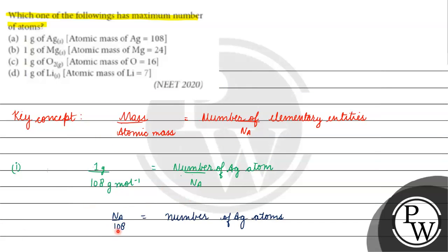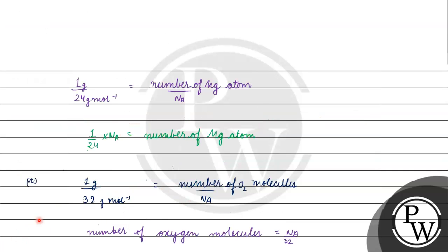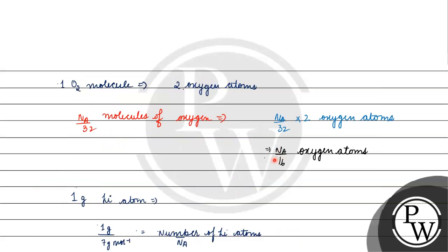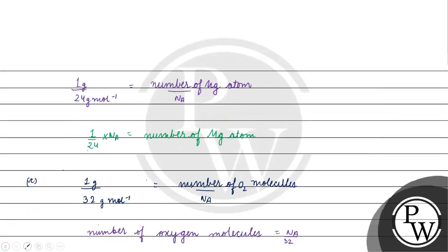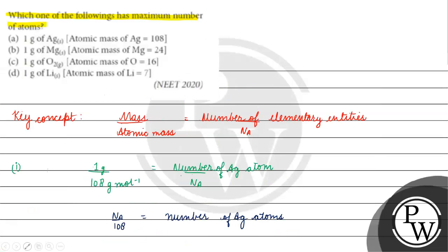We know that if the denominator is smaller, the quantity — that is the number of atoms — will be larger. We have denominators 108, 24, 16, and 7. The smallest denominator is 7, which is lithium. Therefore, lithium has the maximum number of atoms. That is the correct answer. I hope you understood it well. Thank you and all the best.